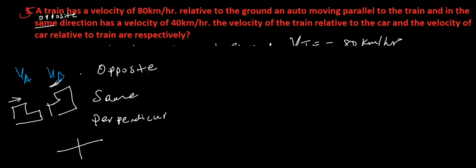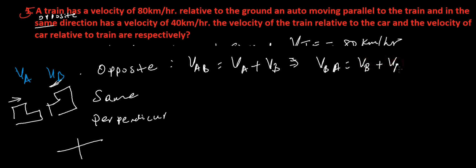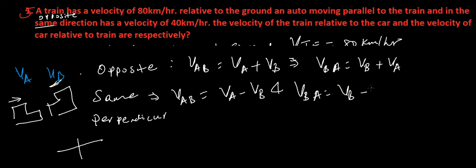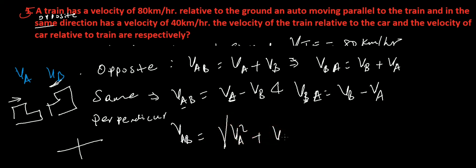For relative velocity: if moving in opposite directions, velocity of A with respect to B equals velocity of A plus velocity of B. For same direction, velocity of A with respect to B equals velocity of A minus velocity of B. For perpendicular directions, velocity of A with respect to B equals the square root of velocity A squared plus velocity B squared.